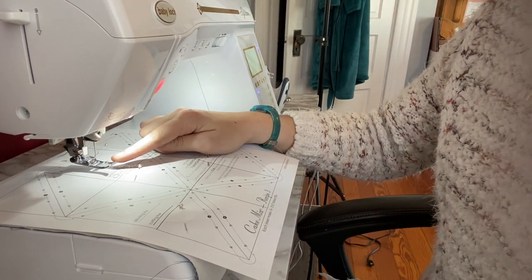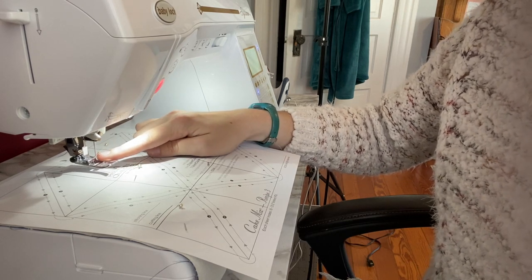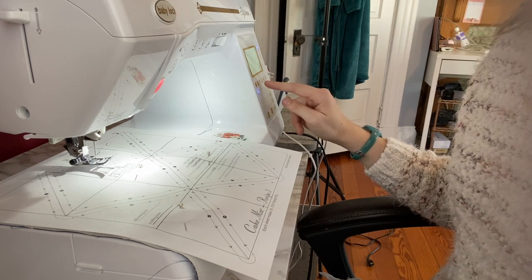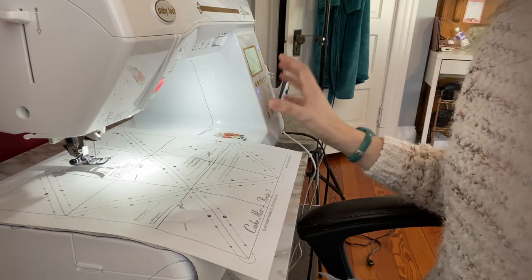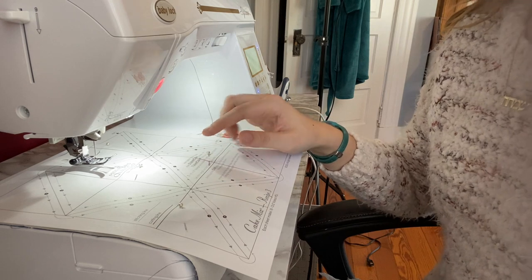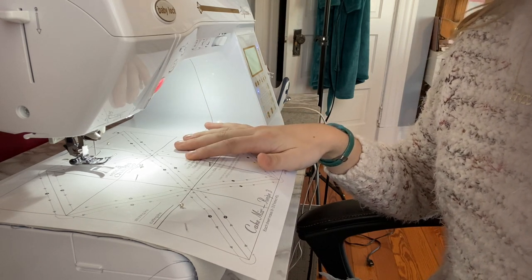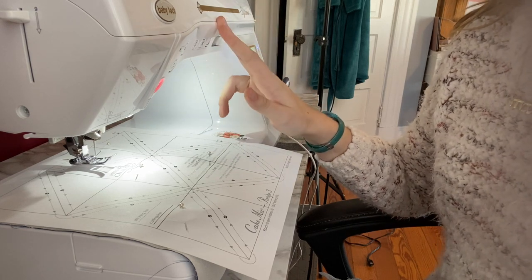my stitch length is the biggest thing that I'm adjusting on my machine I have it down to 1.4 sometimes 1.6 the smaller stitch length is going to make it a lot easier for us to tear out these papers when we're finished sewing another thing that I have that is on my baby lock soprano but it may or may not be on your machine depending on whether or not you have an automatic presser foot